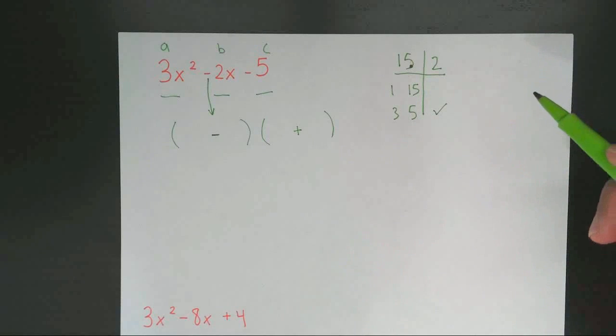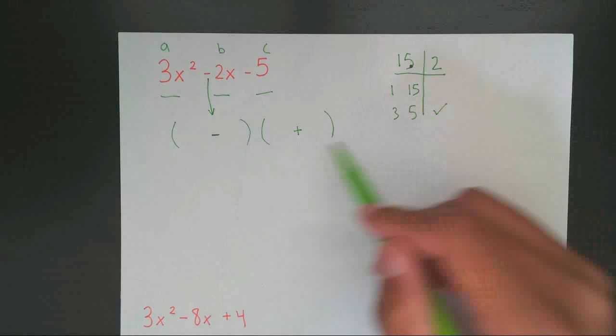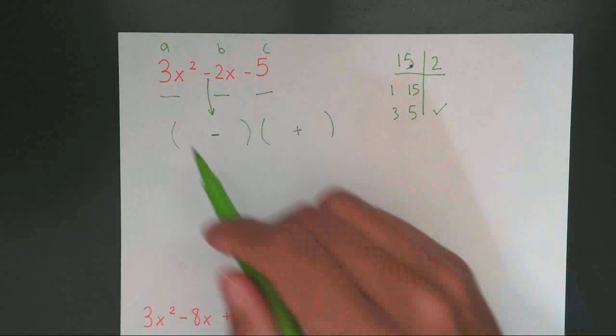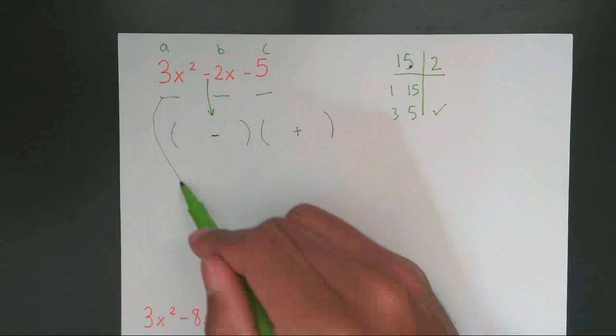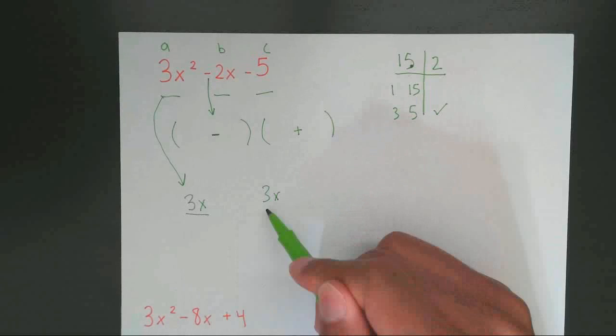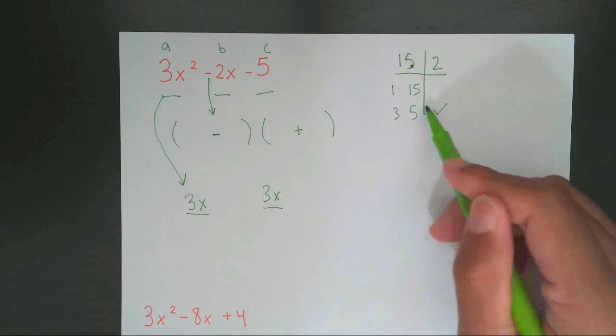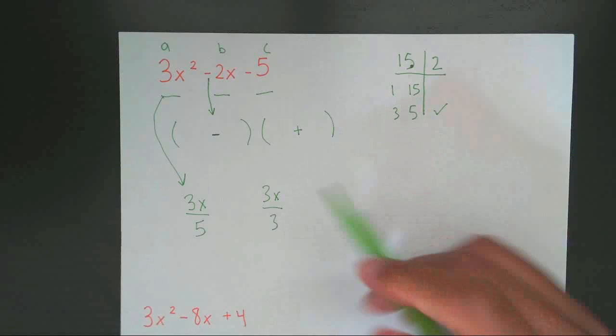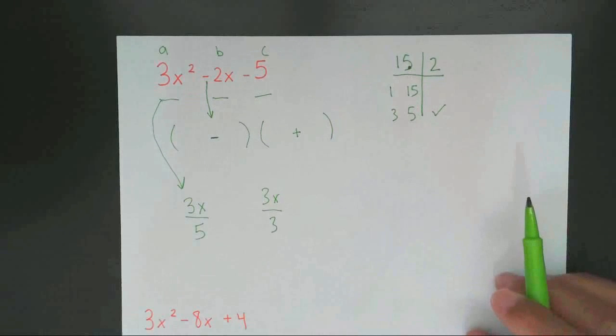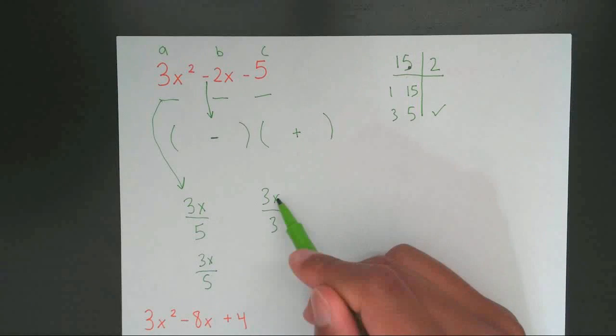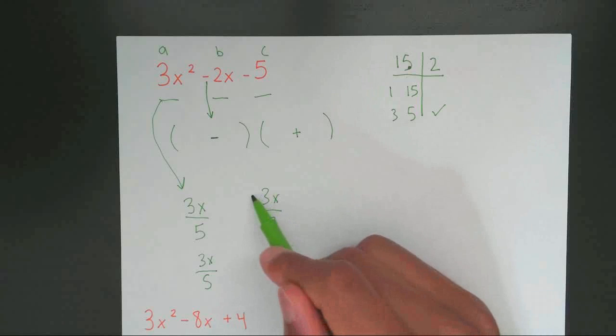But for this type of problem normally we would put the bigger number in the first parentheses and the smaller one in the second. But we can't do that here because of that 3x. So what you need to do is you need to bring down this 3x and set up two different fractions. And you're going to put the bigger number still underneath the first parentheses underneath the first 3x and the smaller one here. Now your next step is you're going to factor this out. You're going to simplify it. I can't simplify this so I'm going to leave this just like this. But I can simplify this. 3 and 3 can both be divided by 3.